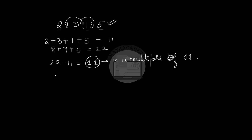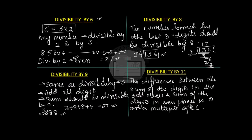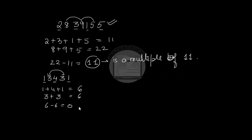Let us take one more example: 13431. Sum of digits at odd places: 1 plus 4 plus 1 equals 6. Sum of digits at even places: 3 plus 3 equals 6. Difference: 6 minus 6 equals 0. Since the difference is 0, this number is divisible by 11.